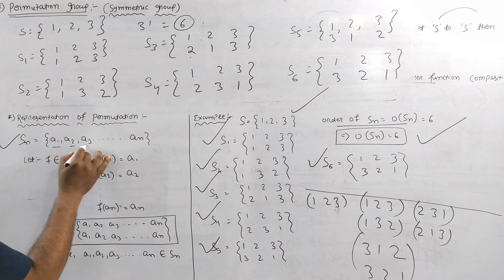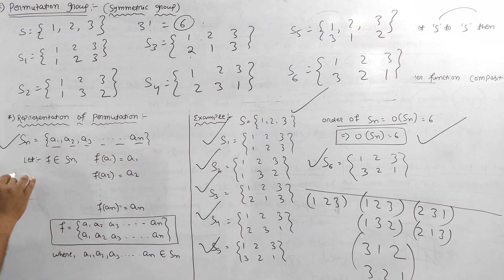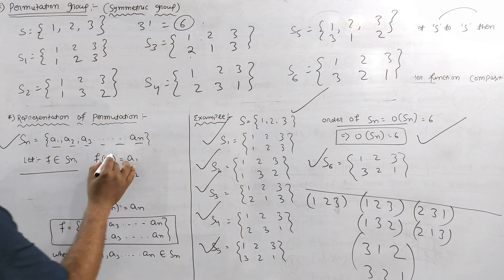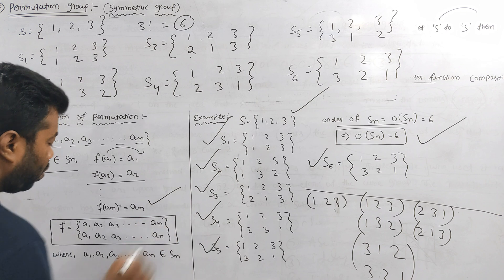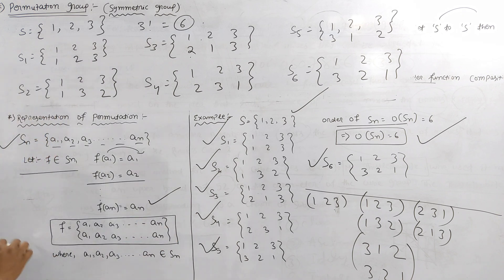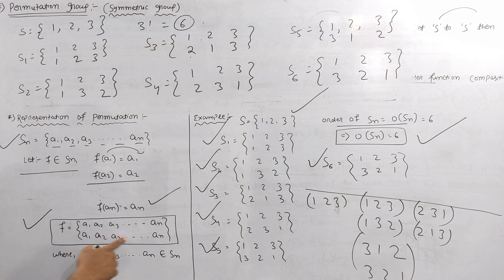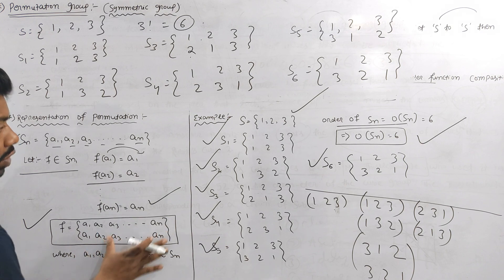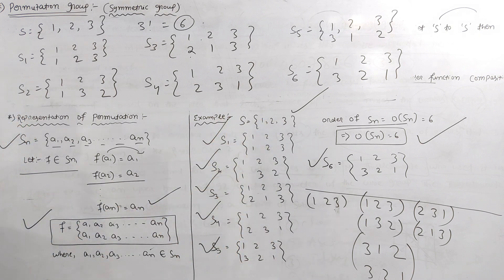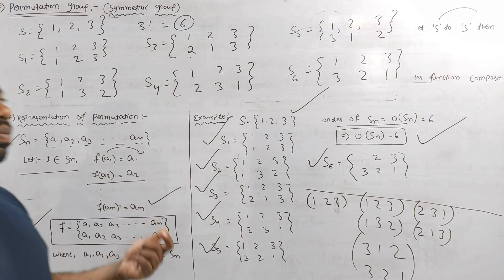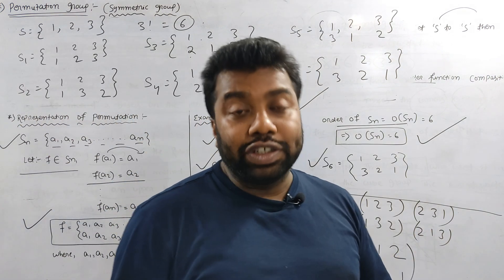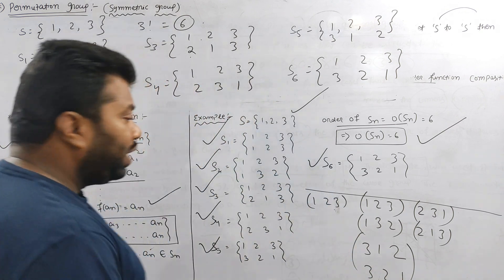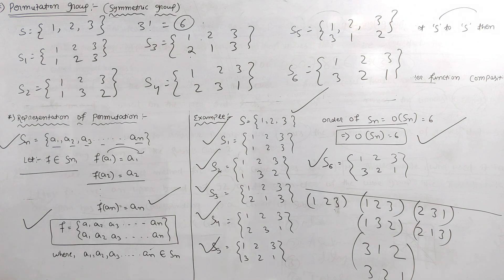The element is a1, a2, a3. The function f(a1) = a1, f(a2) = a2, and f is written as (a1 a2 a3 / a1 a2 a3). After this form, it is called a permutation. This is the permutation — we can write the elements in different arrangements.